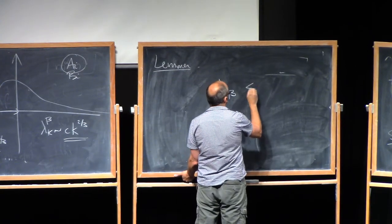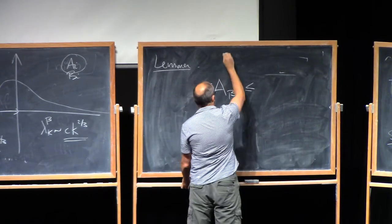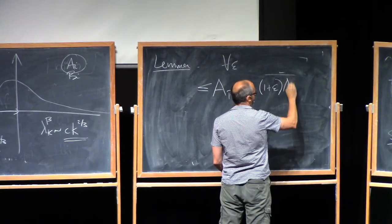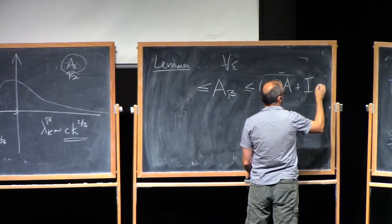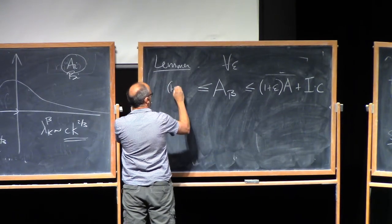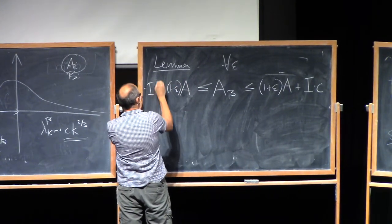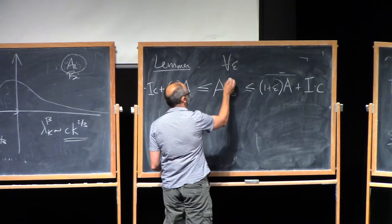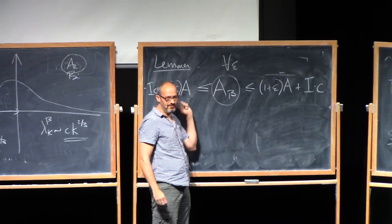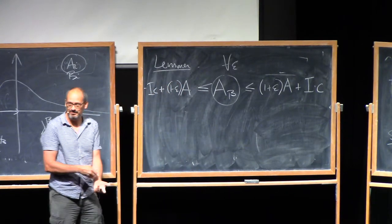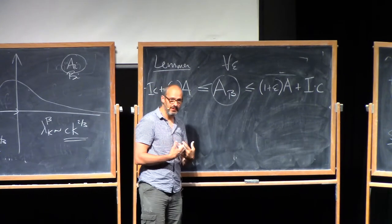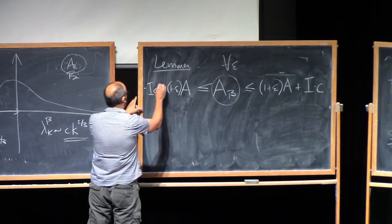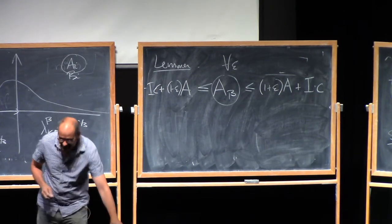Then, this can be upper bounded and lower bounded. So for every epsilon, the following is true. You can upper bound by one plus epsilon times the ARRI operator, plus the identity times some random constant. And lower bounded by the same way. One minus epsilon times the ARRI operator, minus the identity times some random constant. Which is what we call ARRI beta operator? ARRI beta. It's the stochastic ARRI operator. So this is a random operator, and you have this bound. So what does this mean? This means positive definite order.